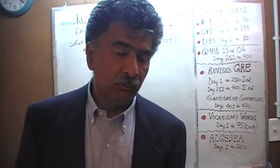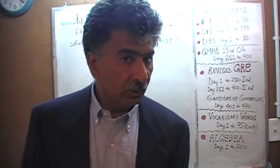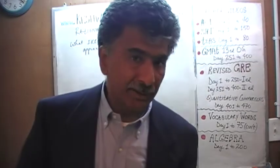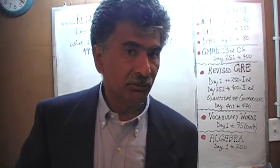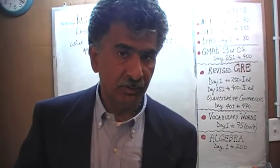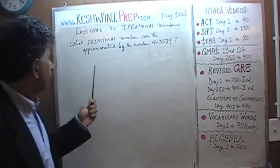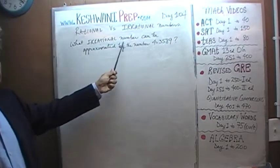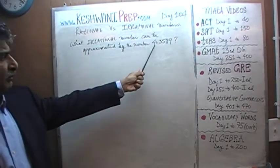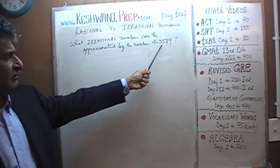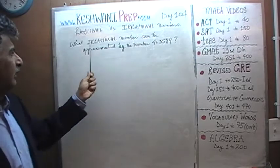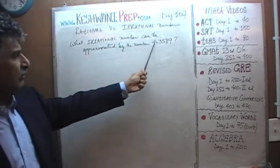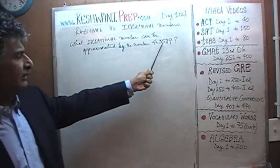The problem that we are going to do for today is already on the blackboard. Let's take a look at it. The problem deals directly with the notion of an irrational number. The question asks: what irrational number can be approximated by the number 4.3589?